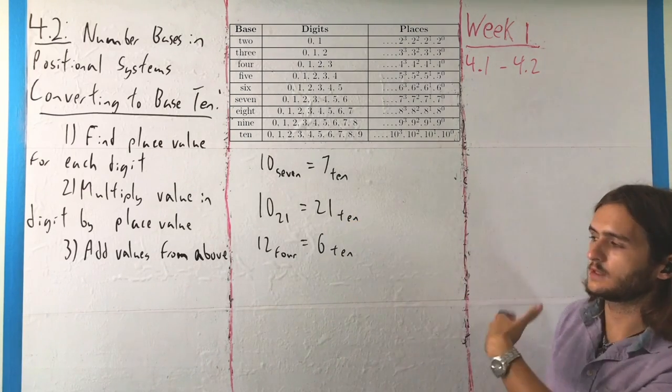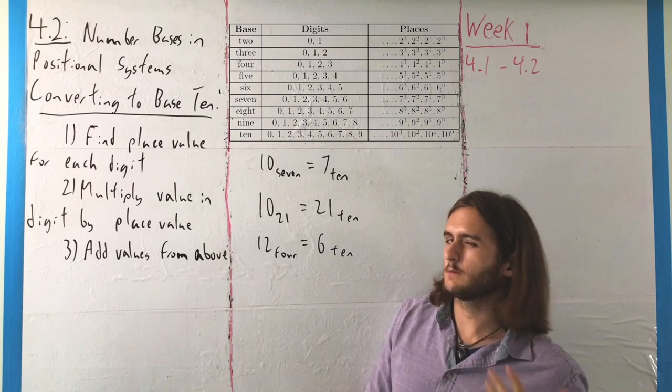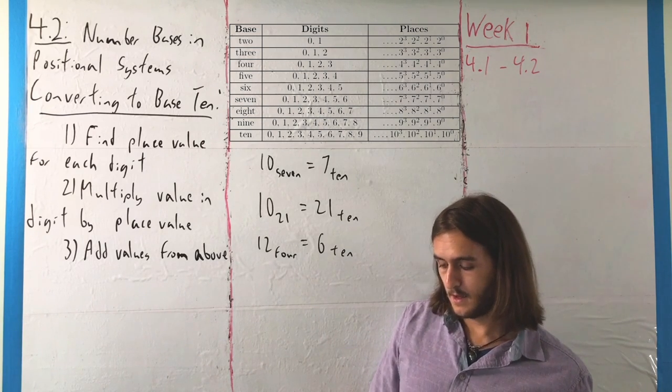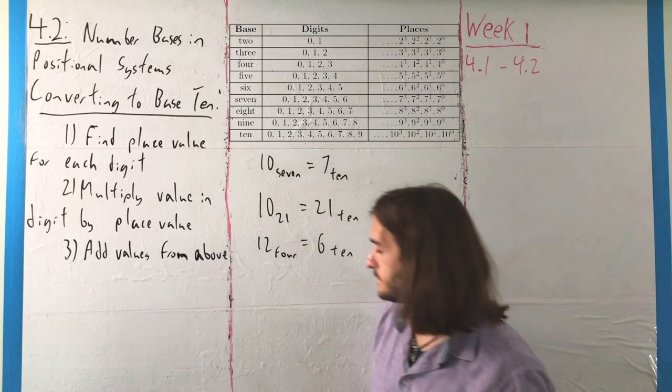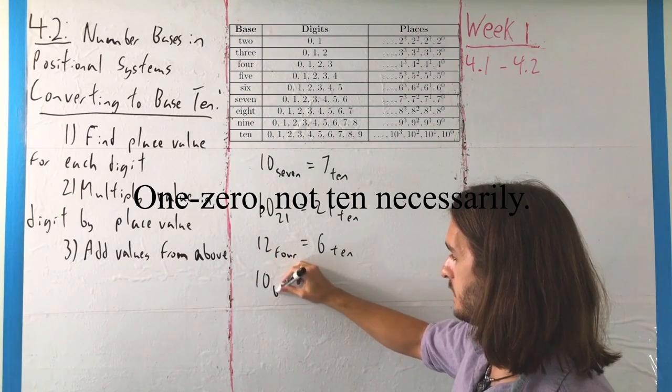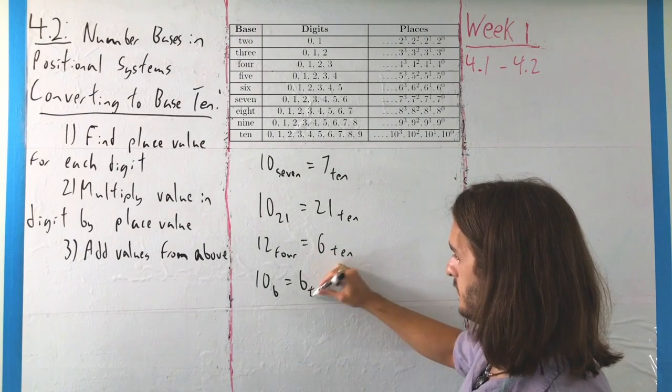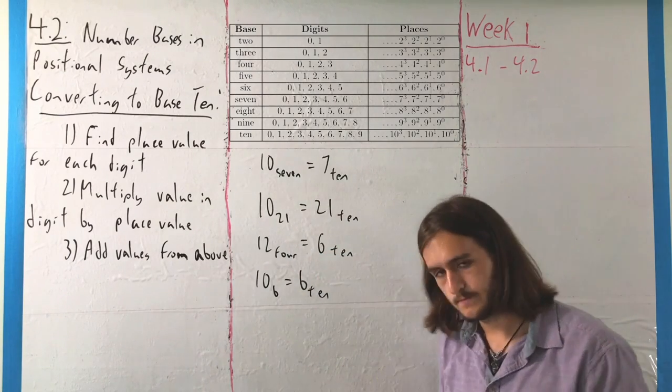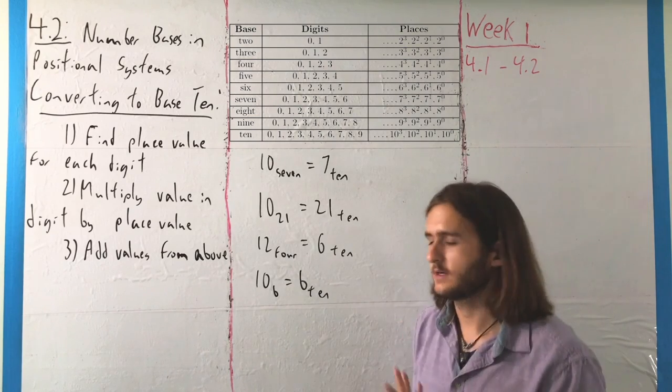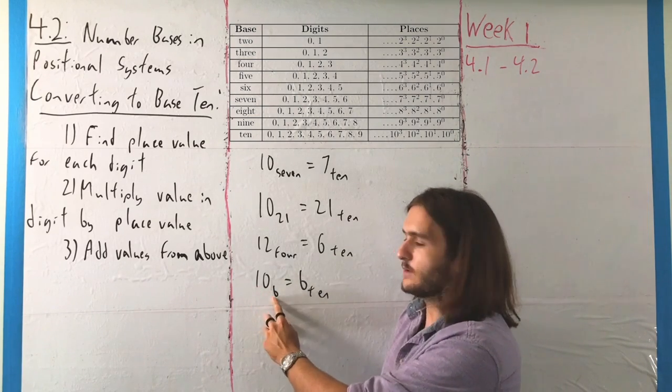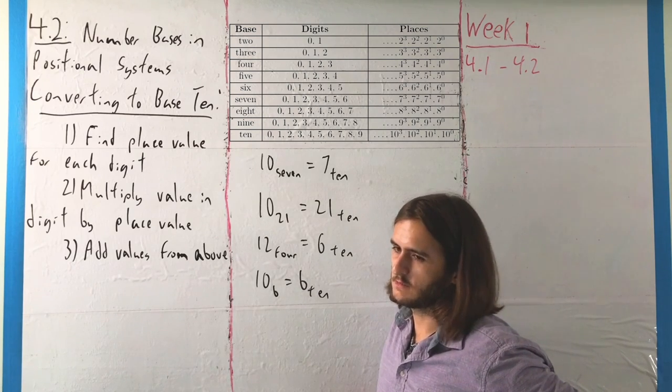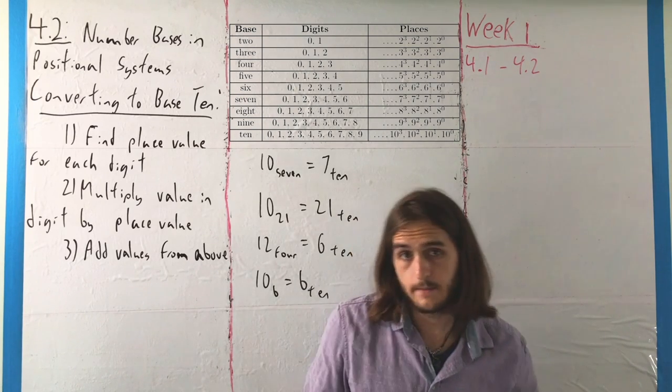You can go on with other conversions than this into other bases, just that base 10 is the most natural for us to work with because it's what we have the most experience with. And in general, for any value, if we have 10 base some value B, then that's going to be B in base 10. That's what it always recognizes is one amount of the base. It's not simple, but it is at least somewhat understandable in that way.